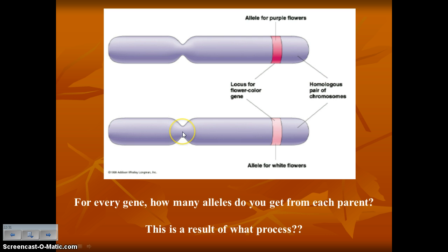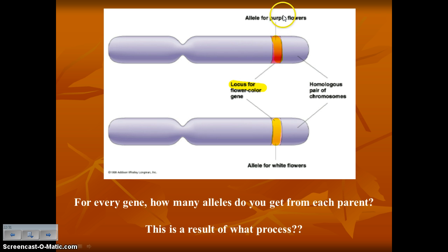Here are homologous chromosomes — you get one set from your mother, one set from your father. On the gene for flower color, the mother plant might give the allele for purple flowers and the father pea plant might give the allele for white flowers. Since purple is dominant over white, that offspring plant would have purple flowers.